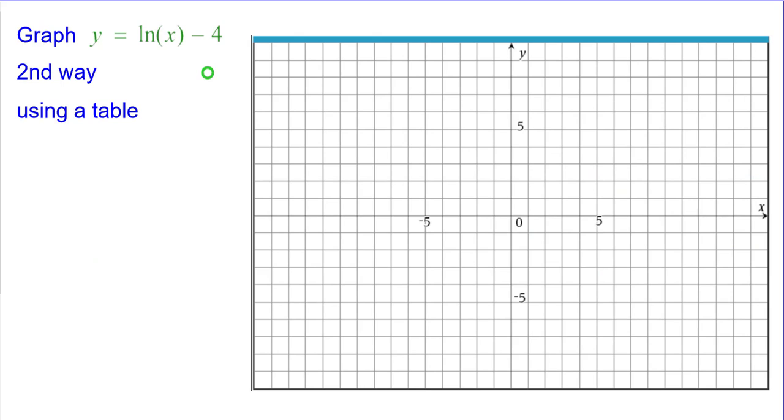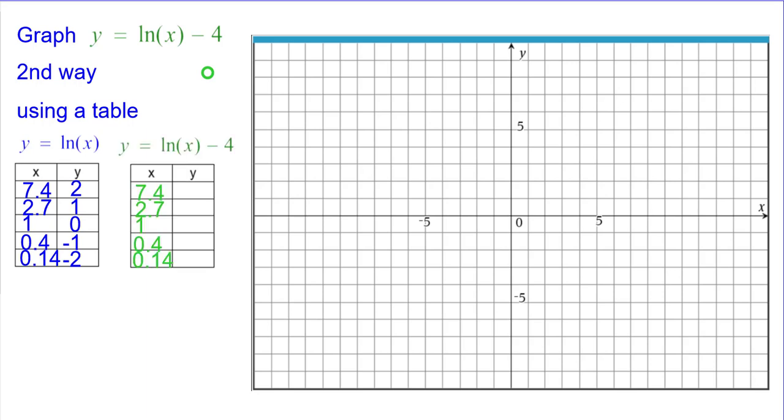The second way using a table. This is our traditional natural log table, these five ordered pairs. What we're going to do is subtract 4 from each of the y-coordinates because that's what the equation says to do.